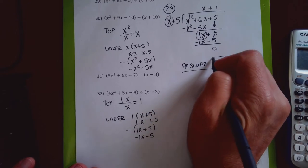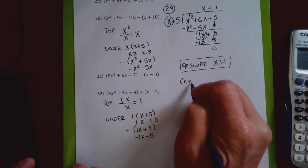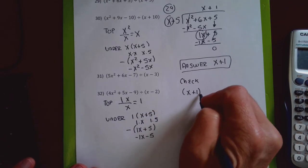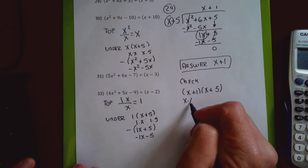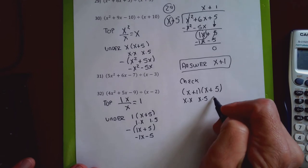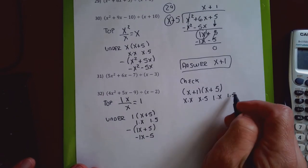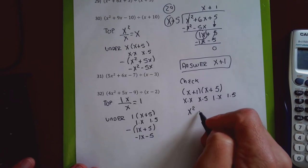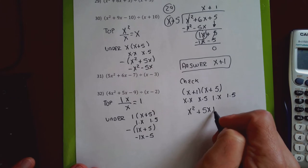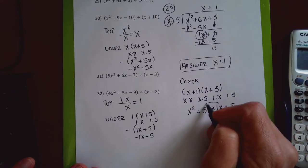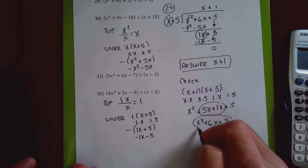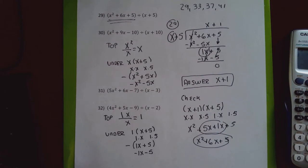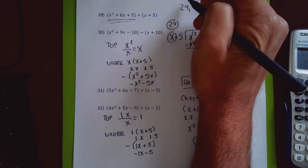When dividing and getting a remainder of 0, checking is easy. I'll take my answer and multiply it by x plus 5 — it should equal x squared plus 6x plus 5. I multiply x times x, x times 5, 1 times x, and 1 times 5. X times x is x squared, x times 5 is 5x, 1 times x is 1x, 1 times 5 is 5. I combine the middle terms, adding 5x and 1x to get 6x. The result matches perfectly, so my answer is right. That's problem 29.